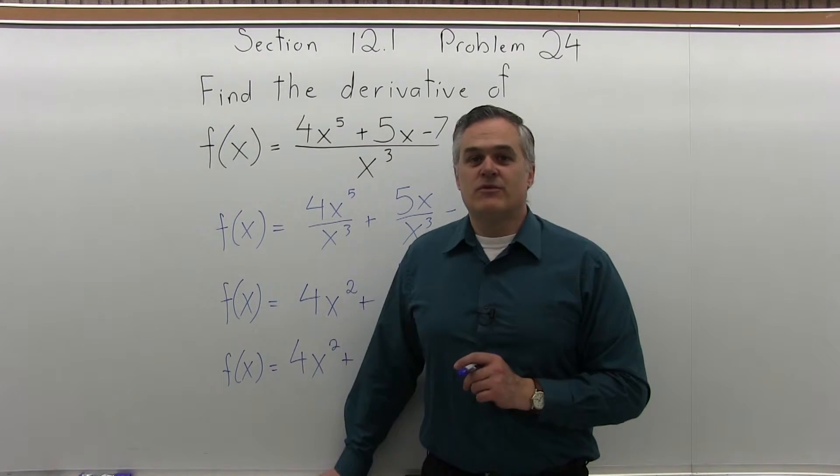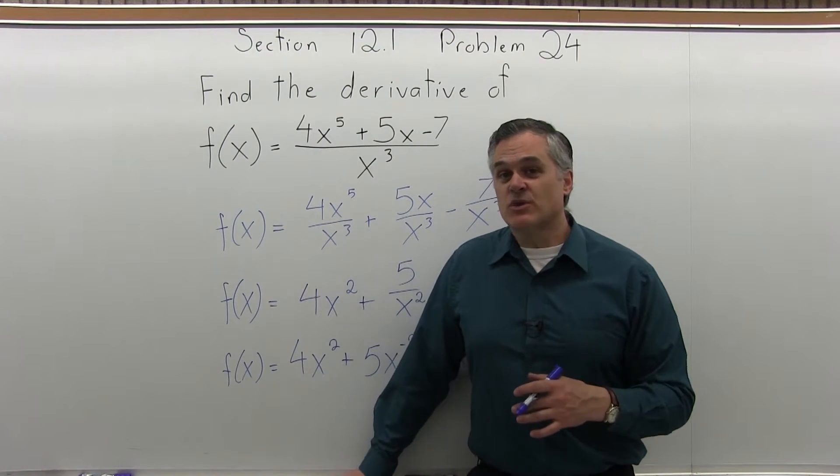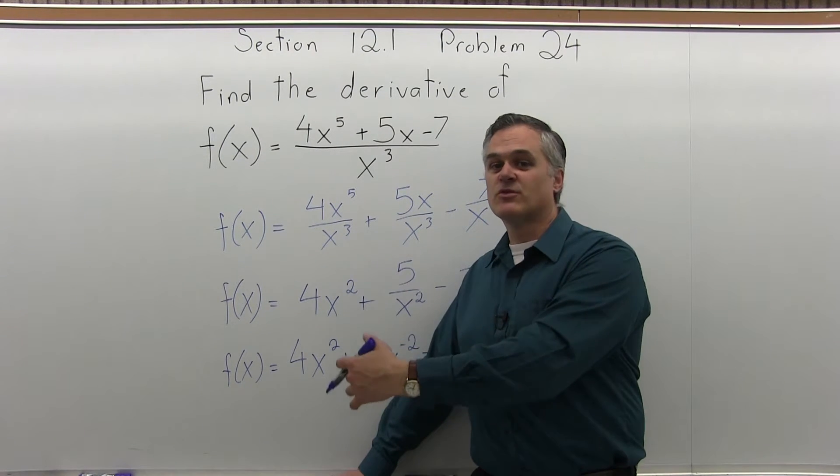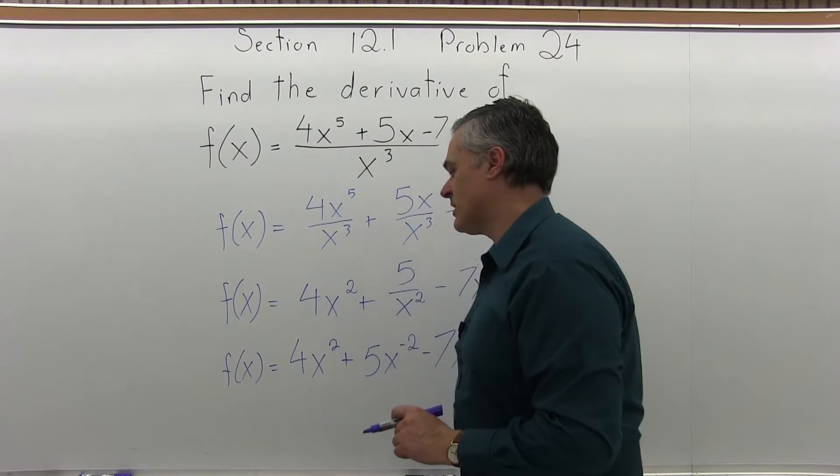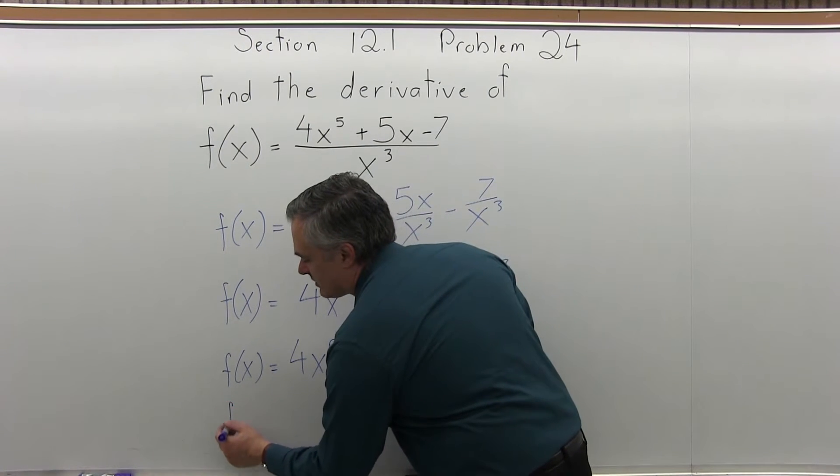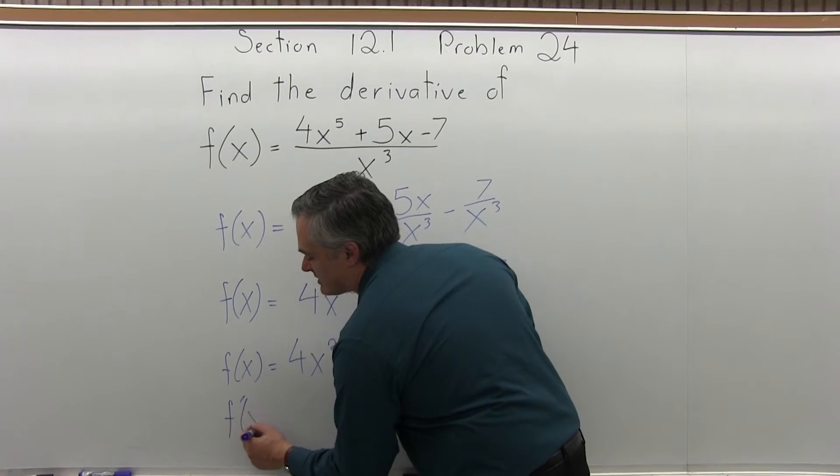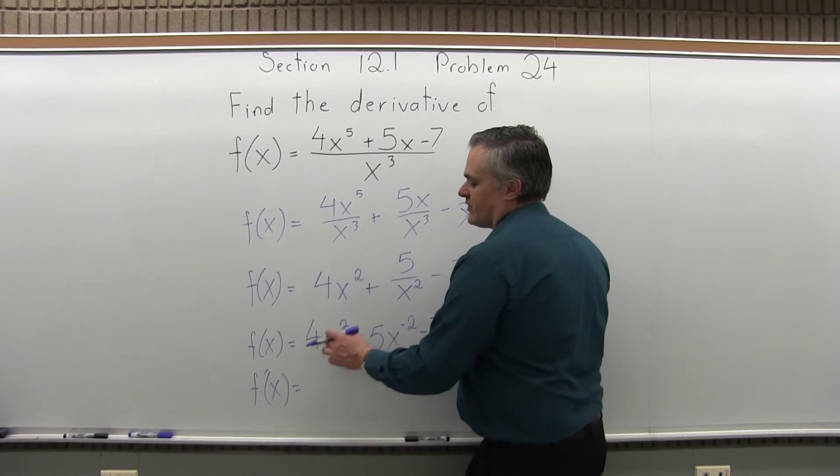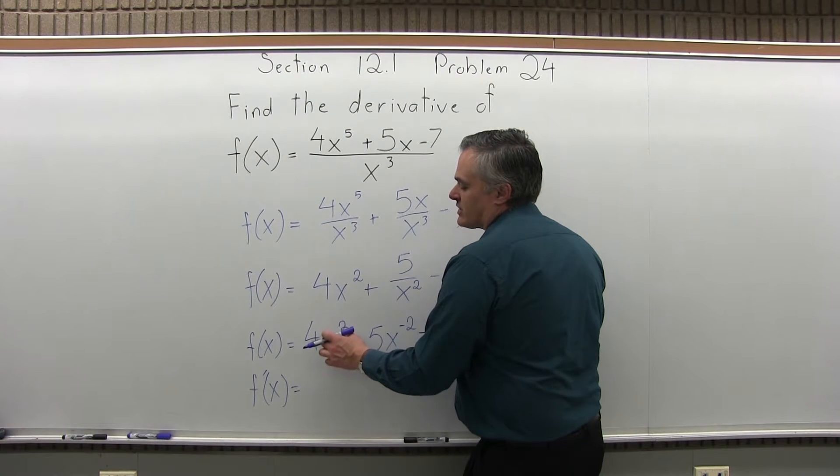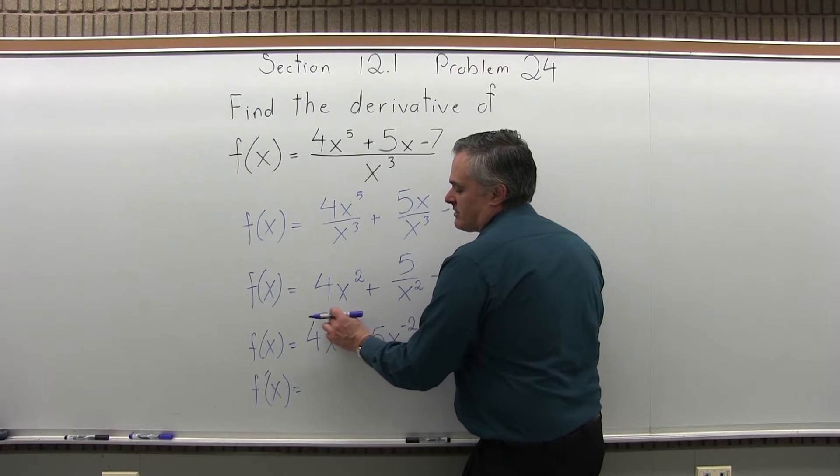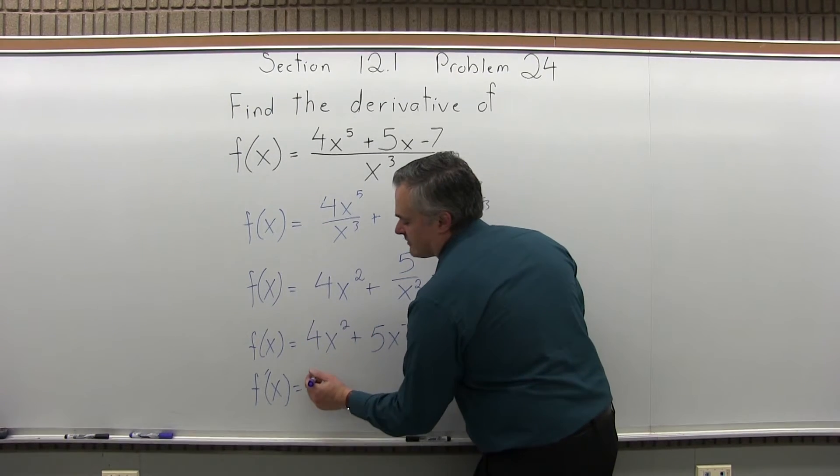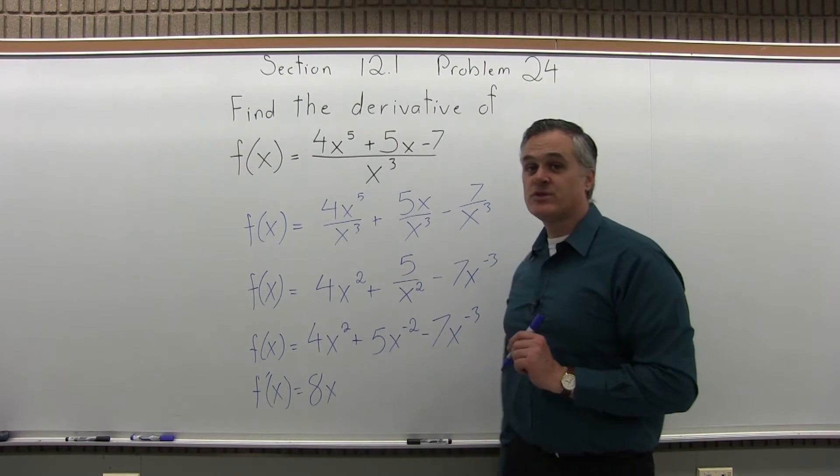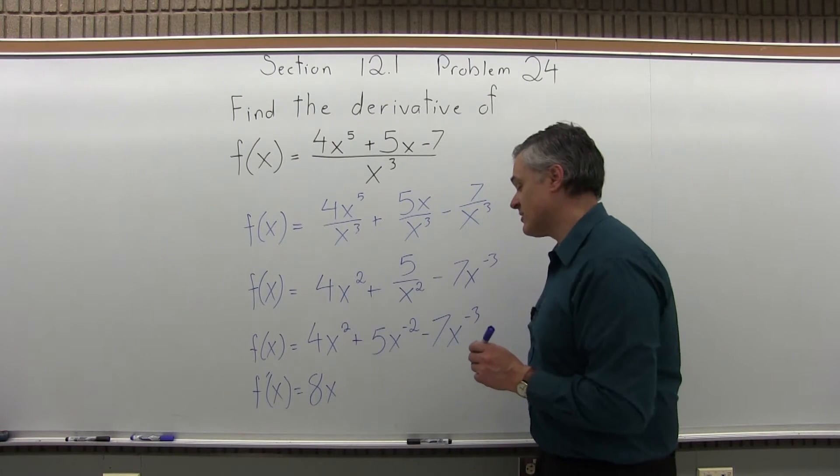Now, no more variable in the denominator. Each piece is written with a number in front, a variable, and an exponent. So for each piece, I'm going to bring the exponent down times the number in front and reduce the exponent by 1. So now I have f prime of x. f prime of x equals the first piece of my function, 4x squared. The exponent of 2 comes down times the 4, the number in front, and gives me 8x to one less power, so first power. Just plain old 8x. You don't have to write the first power.